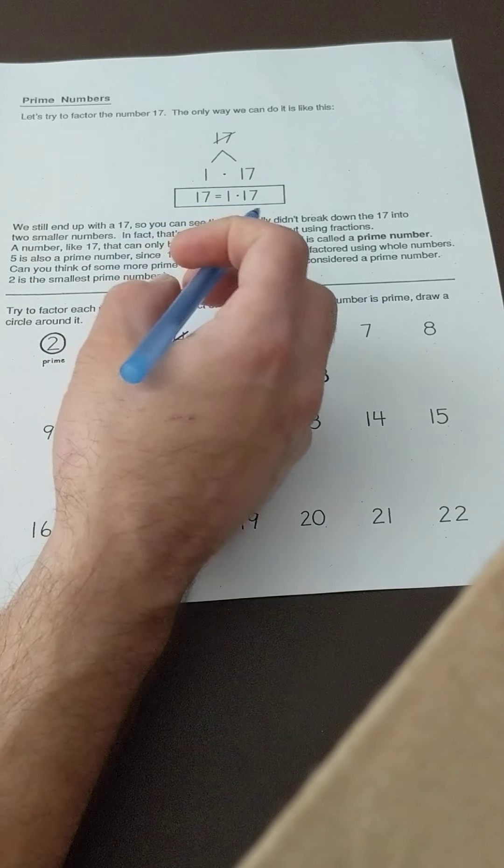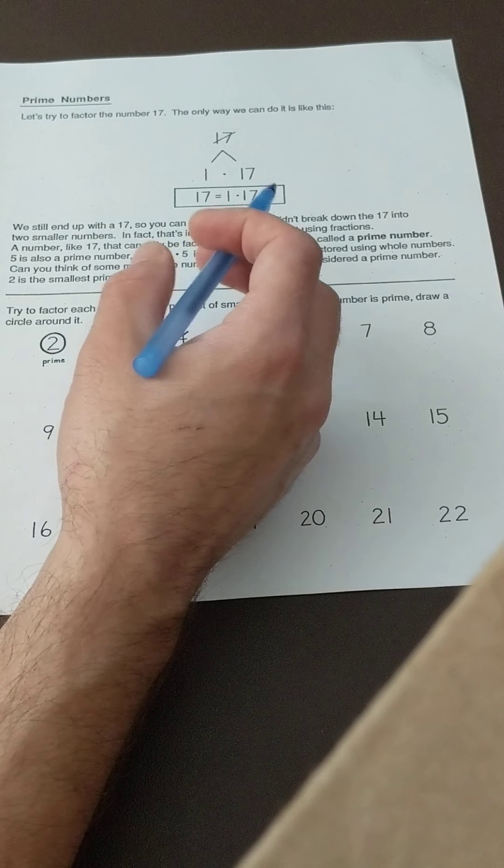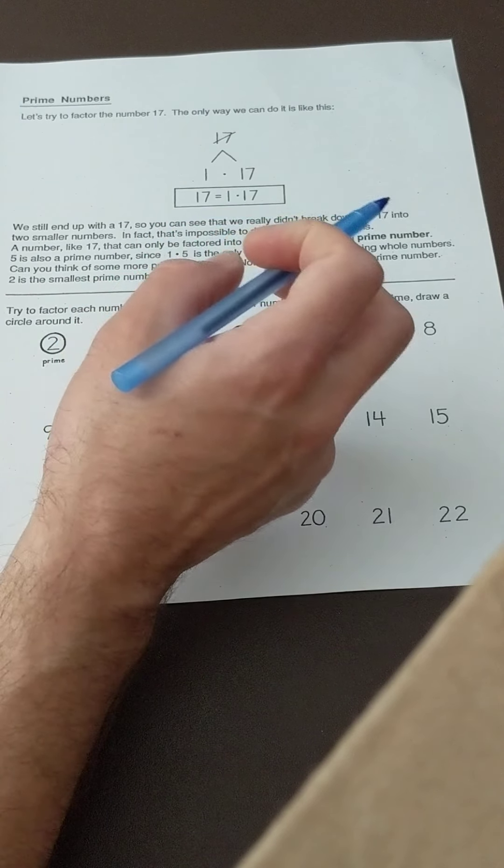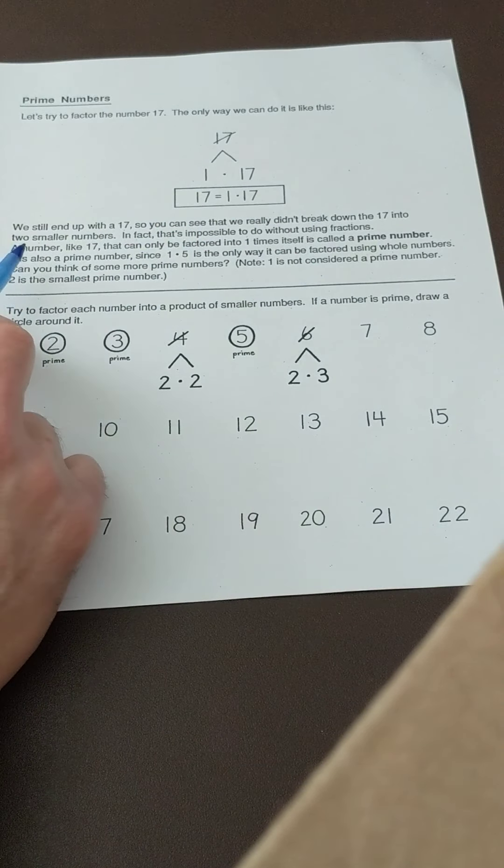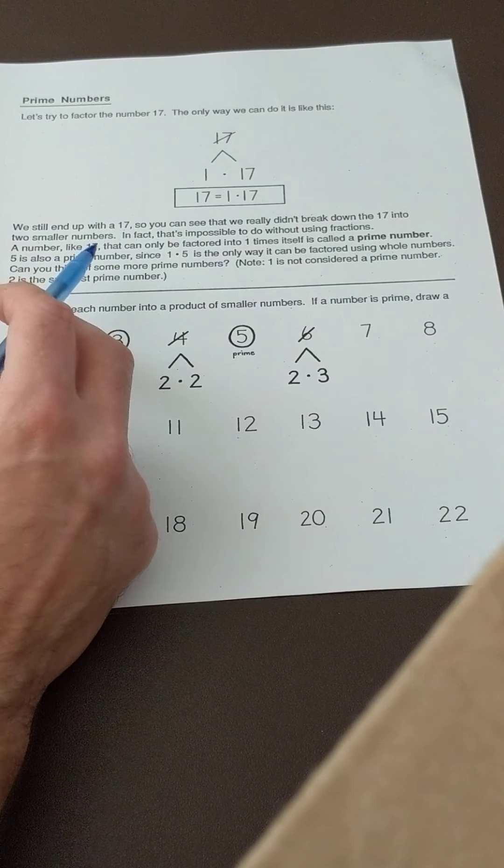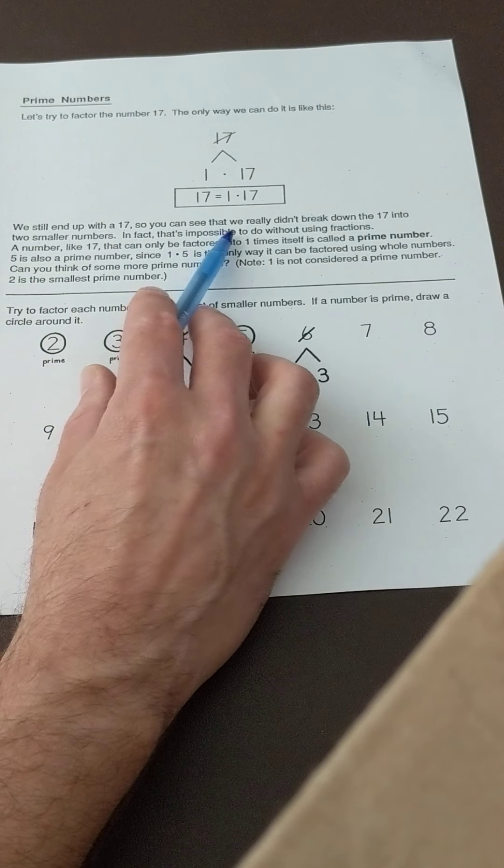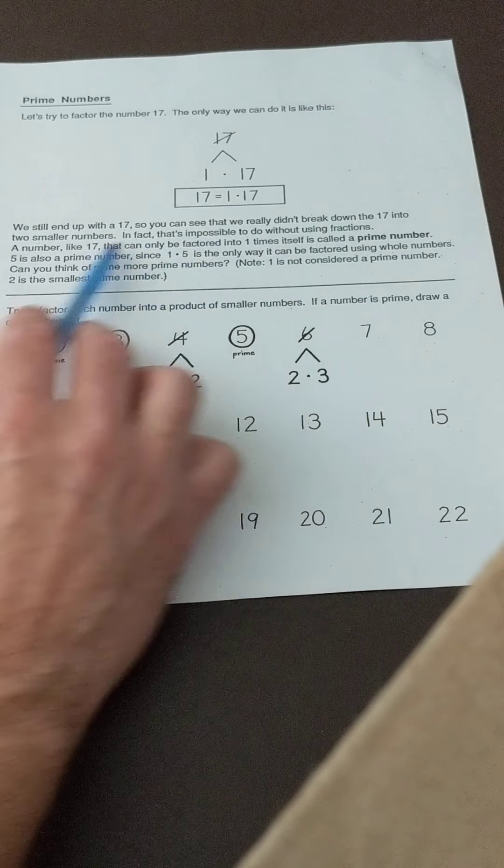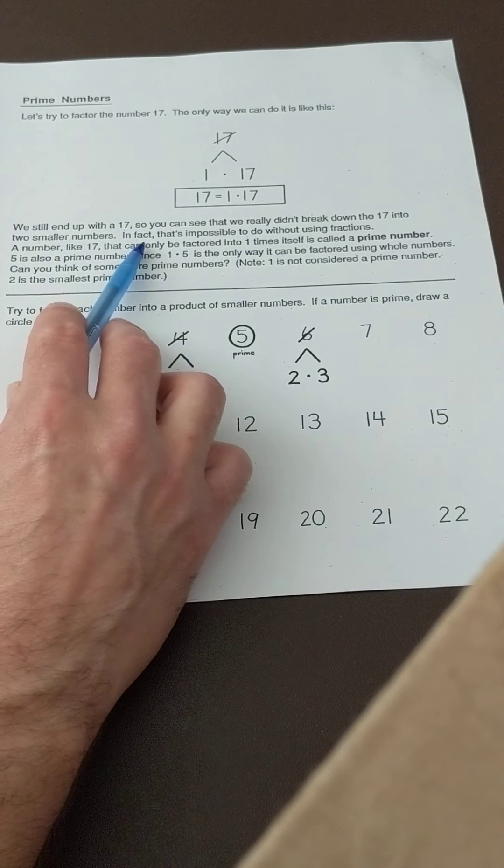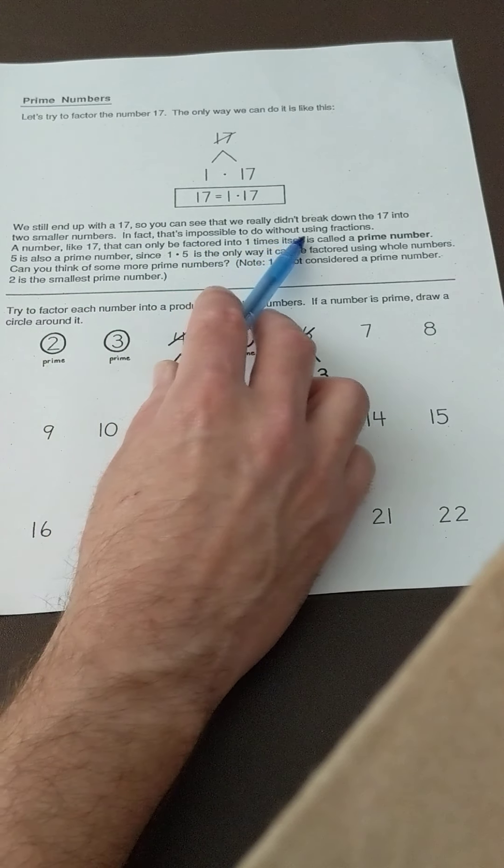If you look back at your multiplication table, you're not going to find 17 anywhere on there for a reason. We still end up with the 17, so you can see that we really didn't break down the 17 into two smaller numbers. In fact, that's impossible to do without using fractions.